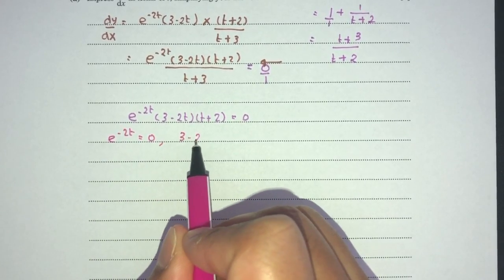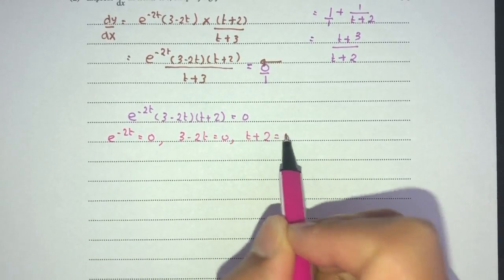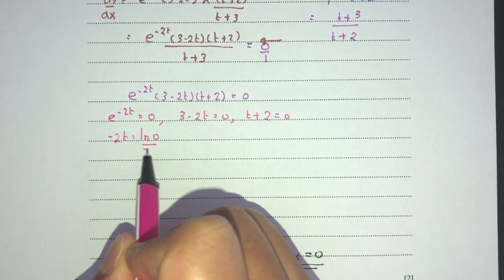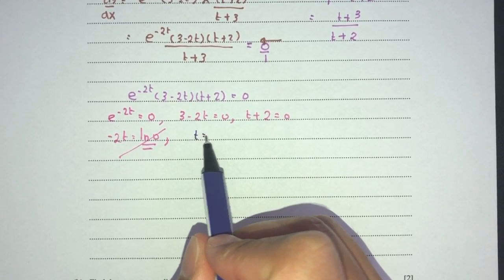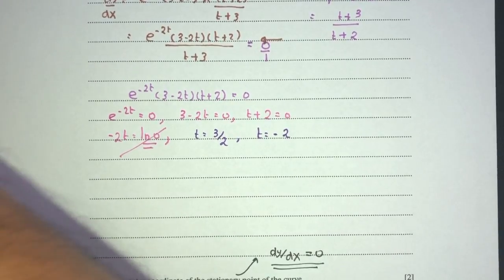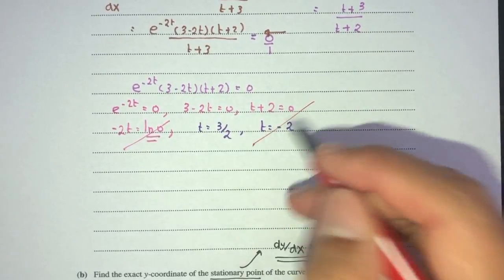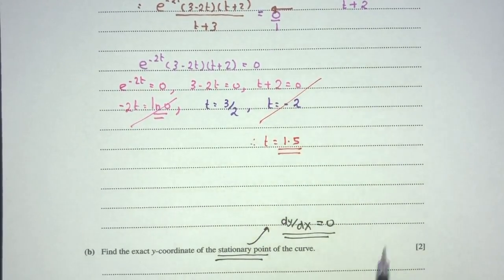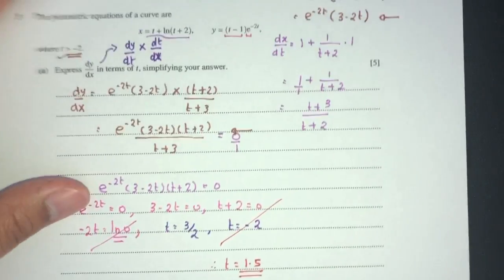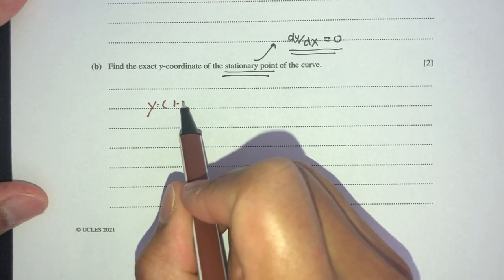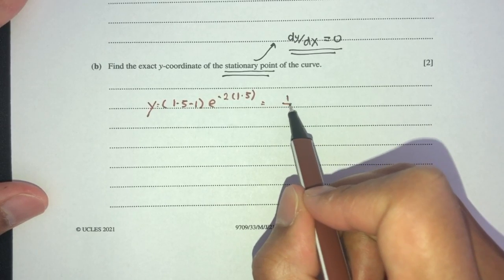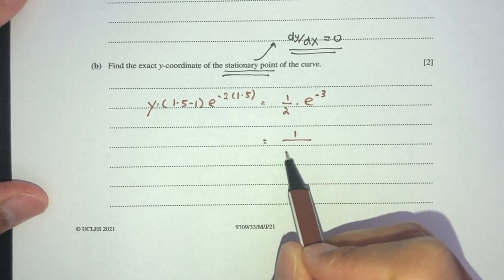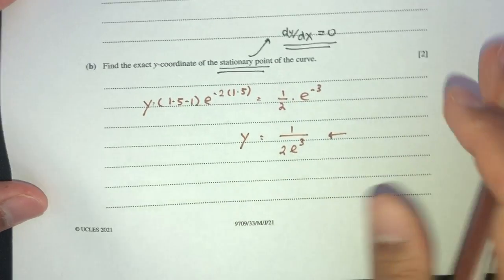e^(−2t) = 0 is not possible since ln(0) is undefined. From (3 − 2t) = 0, t = 3/2. From (t + 2) = 0, t = −2. But the question states t > −2, so t = −2 is excluded. Therefore t = 1.5 = 3/2. Substituting into the y equation: y = (t − 1)e^(−2t) = (1.5 − 1)e^(−3) = (1/2)e^(−3) = 1/(2e³). This is the exact y-coordinate for part b.